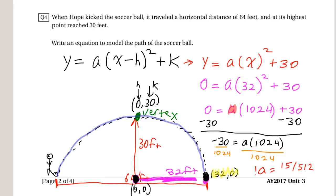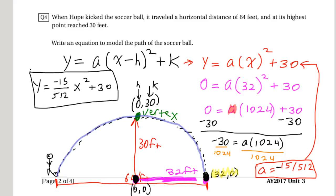So a is going to be 15 over 512. Okay, that means that this a can now get sent back up to here, which will give me the entire problem. Oh, wait, negative, because negative 30 over a positive number, so negative 15 over 512. So this entire equation is going to end up being y = -15/512 x² + 30. And that is the equation of the parabola that we needed.